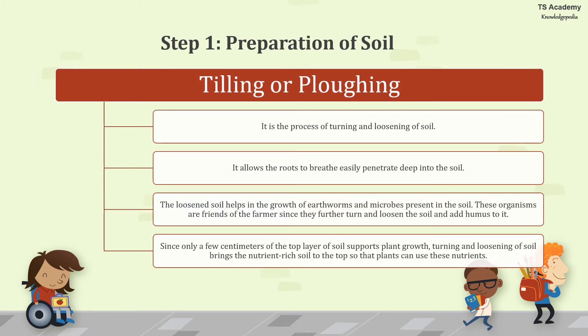Step 1 is preparation of the soil. This is done by tilling or plowing, which is a process of turning and loosening of the soil. It allows roots to breathe easily and penetrate deep into the soil. It also helps in the growth of earthworms and microbes, which are farmers' friends as they further turn and loosen the soil and add humus to it. Since only a few centimetres of the top layer of the soil supports plant growth, turning and loosening brings nutrient-rich soil to the top.